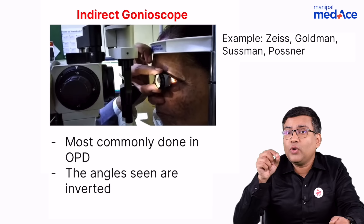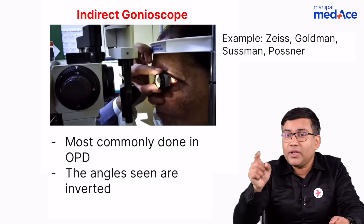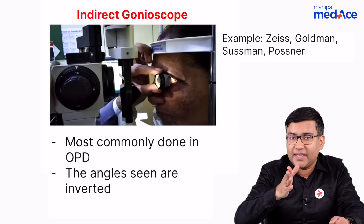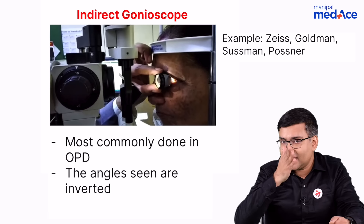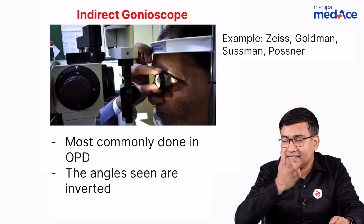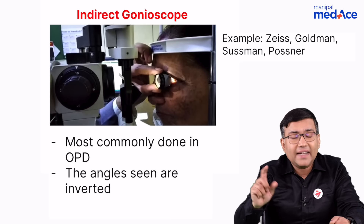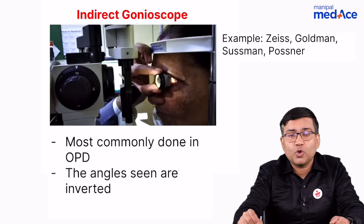When you are doing a direct gonioscopy, you are seeing the angle of the same side — so if you are seeing the nasal side, it is actually the nasal side. Both direct and indirect gonioscopes are very useful for assessing the angle or performing surgeries at the level of the angles.